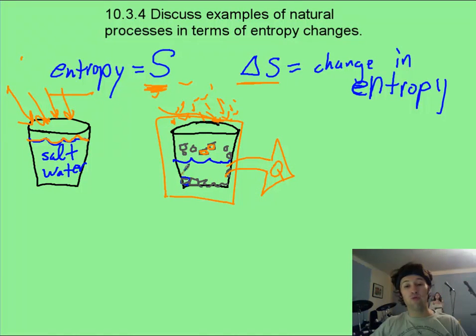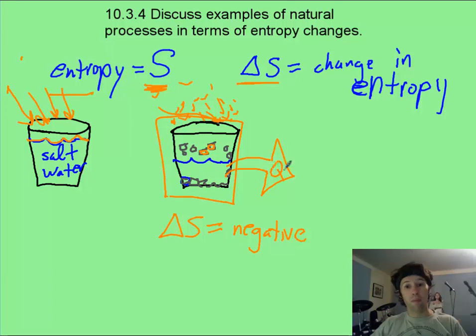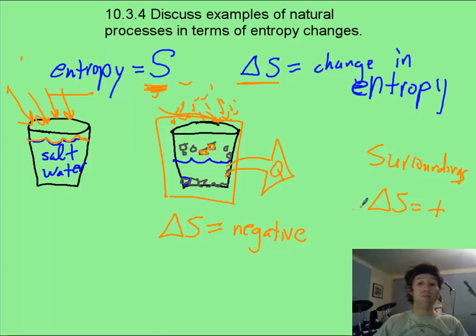So in a local system, you might have the delta S as being negative. But with the surroundings and everything around here, the delta S is going to be positive, and it's going to be more positive than this negative here, so that you can still say that entropy is always increasing the universe. Our universe is always becoming more disordered.